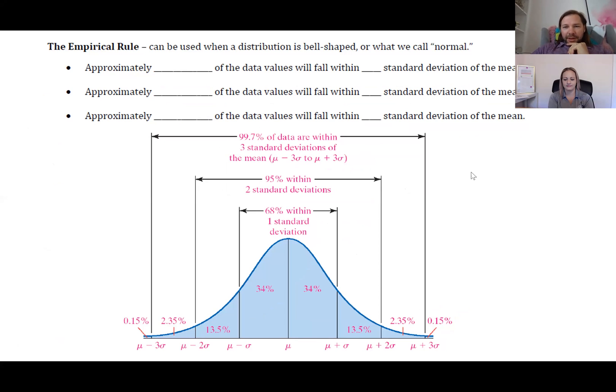We're going to talk about the empirical rule. The empirical rule is similar to Chebyshev's theorem but more specialized. It says that if your data is bell-shaped or you have a normal distribution, then...